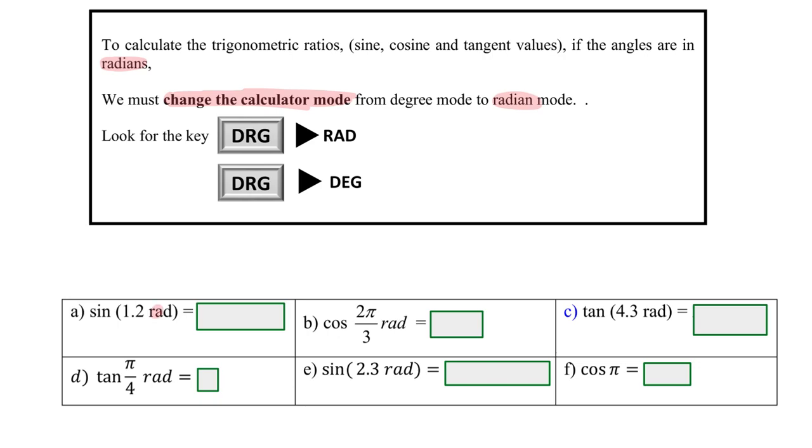So for Mr. Tan, when I see radian, I straightaway convert and change the calculator mode to radian mode before I press sine 1.2. You should get 0.932 rounded off to three significant figures.